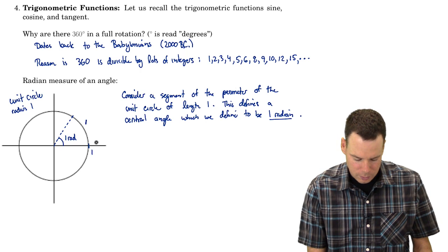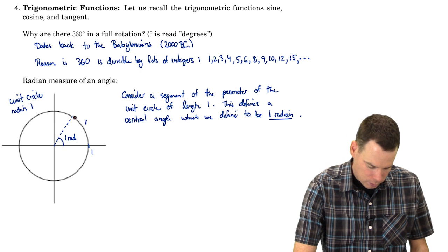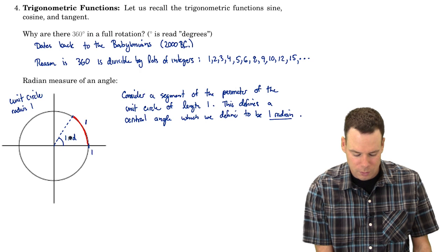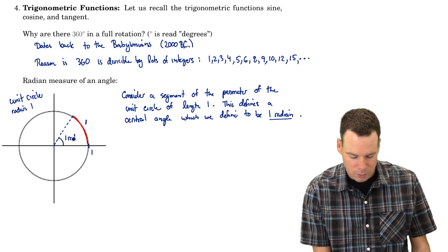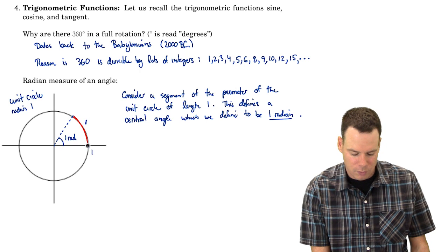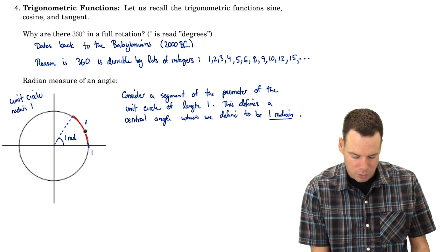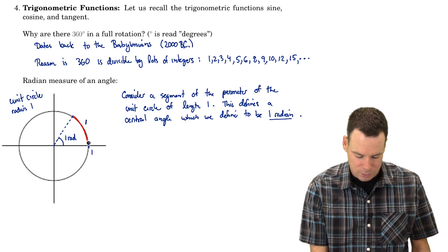Think about it this way. An angle of measure 1 radian is the angle when you draw the arc subtended by that angle on the unit circle, it gives an arc of length 1. So there's this direct relationship. The radian measure, the value of the radian measure is the same as the value of the length of the arc. So one radian gives an arc of length 1, two radians would give an arc of length 2, half a radian would give an arc of length 1 half. So you can directly go from the radian measure to the length of the arc subtended by that angle.